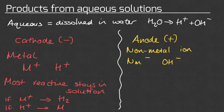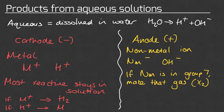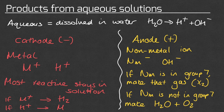Just like in the molten example, at the positive electrode we will have our non-metal ion because opposites attract, but we're also going to have the OH- ion. This is because water splits apart into H+ and OH-, and OH- is negative so it's attracted to the positive electrode. If our non-metal is in group 7 — so if it's a halogen like fluorine, chlorine, bromine or iodine — we will produce that as a gas, written as X₂. So for example chlorine would be Cl₂ and bromine would be Br₂. If the non-metal is not in group 7 — for example oxygen, which is in group 6 — we would make water and oxygen gas instead at the positive electrode.